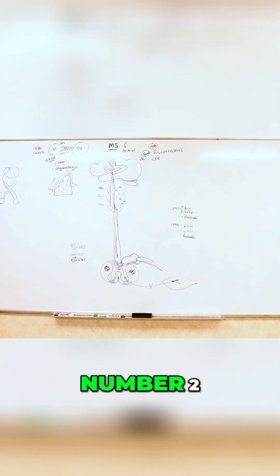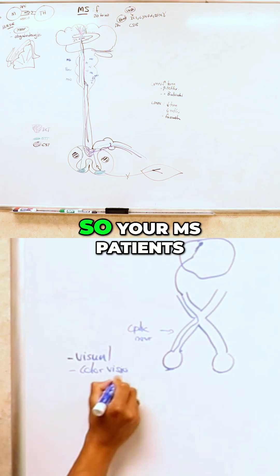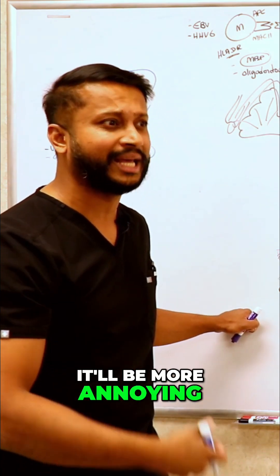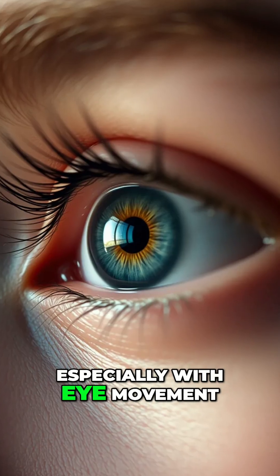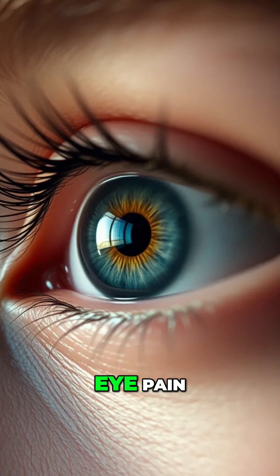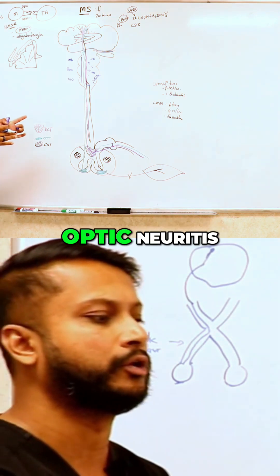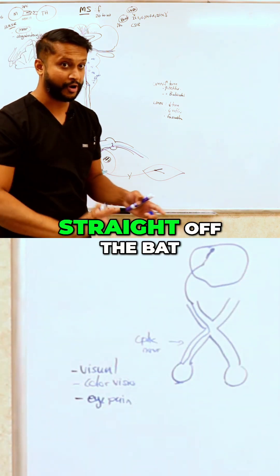Number two, your color vision is going to get affected. MS patients will have problems with color vision. It'll be more annoying than anything else, but you will have some pain, especially with eye movement. You're going to have eye pain from optic neuritis straight off the bat.